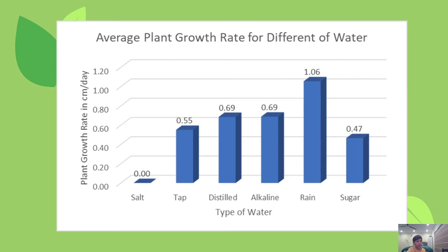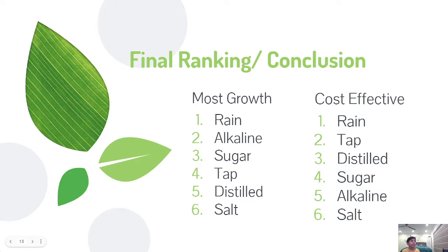From this graph, we can see that rain grew the fastest, alkaline and distilled were similar, followed by tap and sugar, with no growth shown for salt.